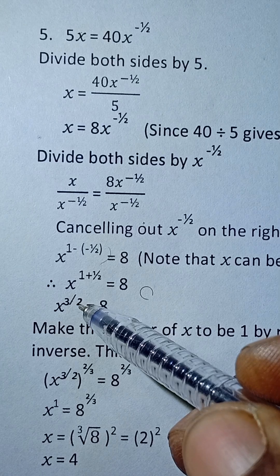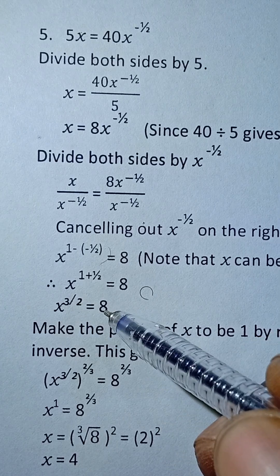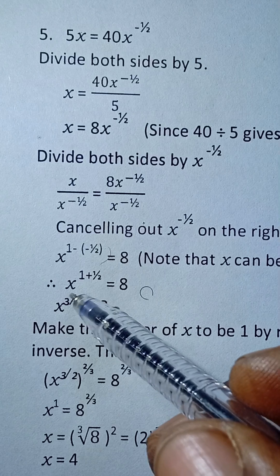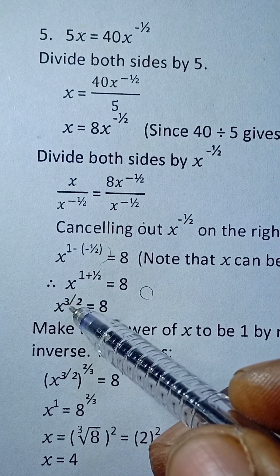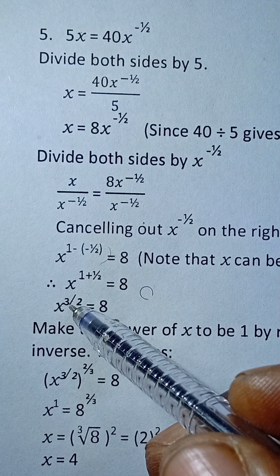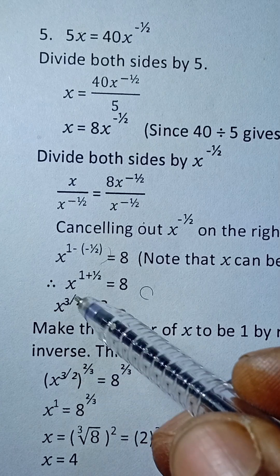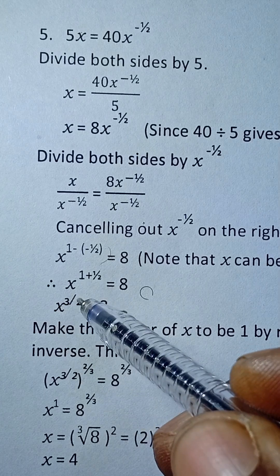So x raised power 3 over 2 is equal to 8. Then the next thing to do now is to see how you can make the power of this to become 1. In order to make the power of this to become 1, you raise the same side to the power of the inverse of 3 over 2.